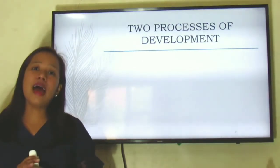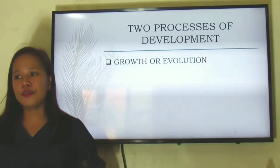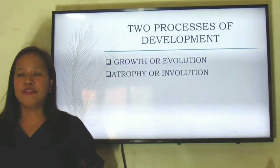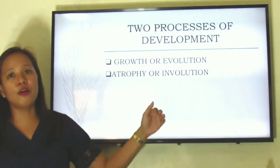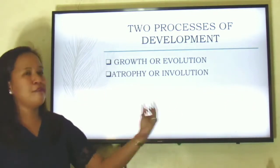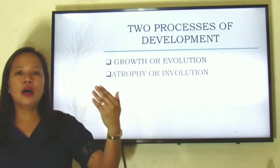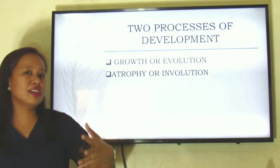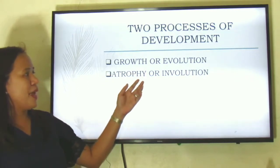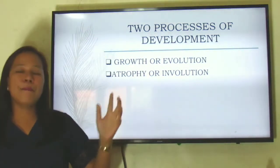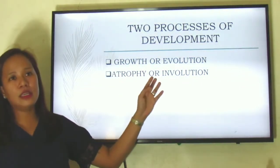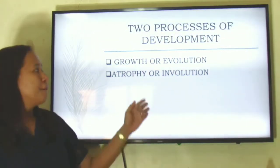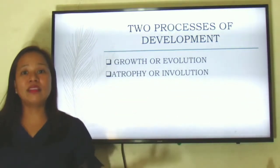There are actually two processes of development. One is growth or evolution, and the other is atrophy. Growth or evolution is the positive form of development — you evolve from a baby to an adult, you become more intelligent and more capable. Atrophy, on the other hand, is the opposite of evolution. Many researchers claim that growth and evolution happen in the earlier years of life, while atrophy happens in the later stages of life.